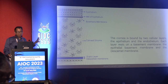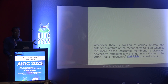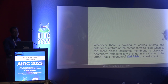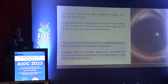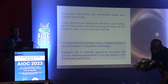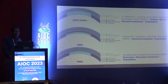D for Descemet's membrane. The cornea is bounded by two cellular layers — epithelium and endothelium — and each layer rests on a basement membrane: the epithelial basement membrane and Descemet's membrane. When there is swelling in the cornea from trauma, the overall curvature of the cornea remains fixed but the more elastic Descemet's membrane is displaced posteriorly, reflecting changes in shape — that's how DM folds are created in cataract surgery. The Descemet's membrane can also break due to corneal stretching during forceps delivery or elevated IOP in infantile glaucoma.